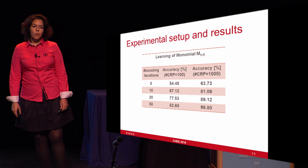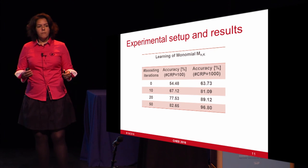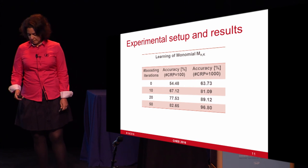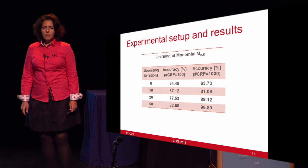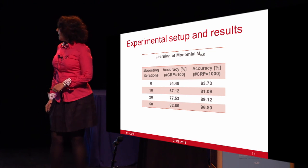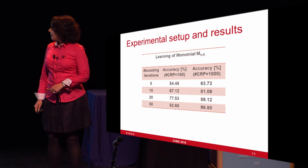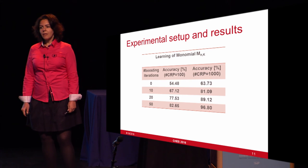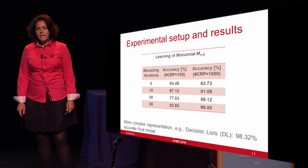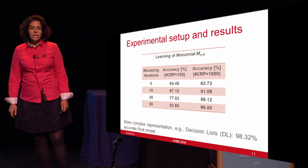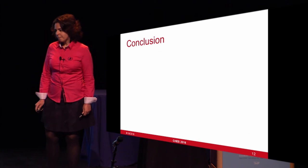Let's look at some results. I show the results for monomials and only for bistable ring PUFs here, but more results for decision trees, decision lists, and twisted bistable ring PUFs can be found in our paper. In the first row, you can see the accuracy of the model without applying boosting. In the last row, you can see the accuracy after 50 iterations of boosting — there is a significant increase in accuracy in both experiments. Moreover, using more sophisticated representations such as decision lists increases accuracy to about 98%.